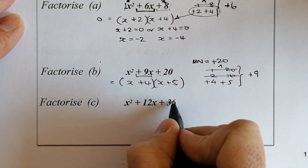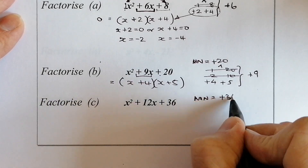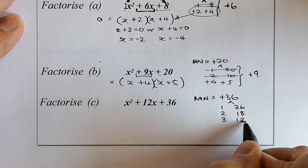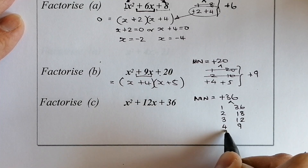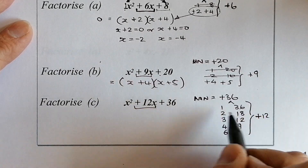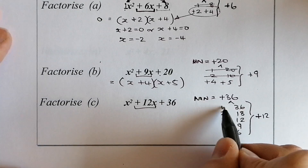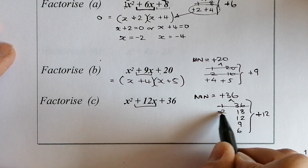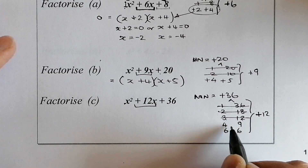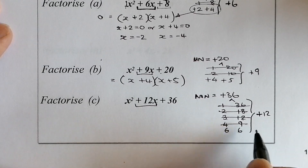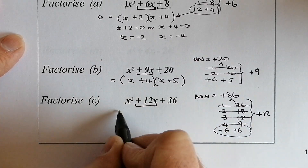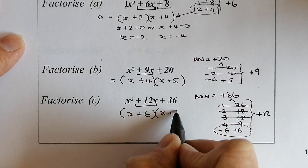Next: magic number is 1 times 36 = positive 36. Factors of 36: 1 and 36, 2 and 18, 3 and 12, 4 and 9, 6 and 6. I'm trying to make positive 12. Checking pairs: 1 and 36 make 35 or 37; 2 and 18 make 16 or 20; 3 and 12 make 9 or 15; 4 and 9 make 5 or 13; 6 and 6 make 12. So the answer is (x + 6)(x + 6), or (x + 6)².